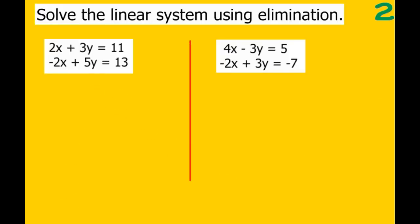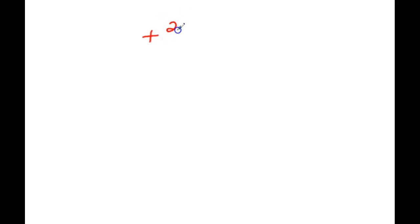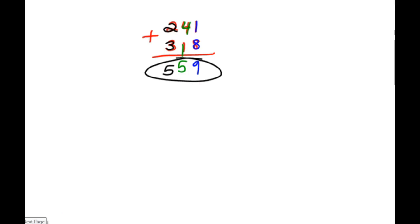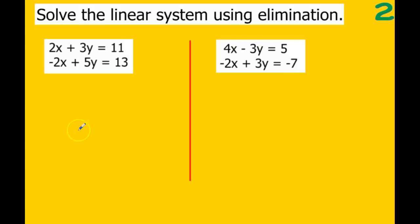Remember back in elementary school when we added, let's say, 241 to 318. If I was going to add those two numbers together, I would add each column: 1 plus 8 is 9, 4 plus 1 is 5, 2 plus 3 is 5, so my answer would be 559. Same thing if I was subtracting. We're going to be doing that same method, but with equations — we have two equations and we're going to add them together so that either the x's or the y's will eliminate.